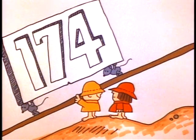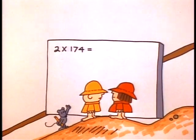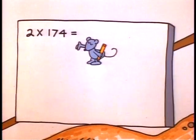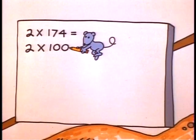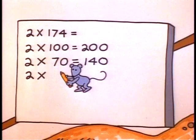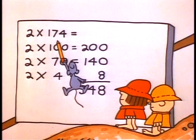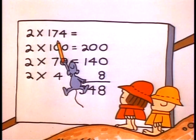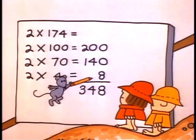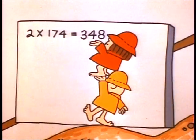Now if you want to multiply two times a hundred and seventy-four, or some big number like that: two times a hundred and seventy-four equals two times a hundred, plus two times seventy, plus two times four — that's all. So two times a hundred and seventy-four equals two hundred plus a hundred and forty plus eight, which is three hundred and forty-eight. It's elementary!